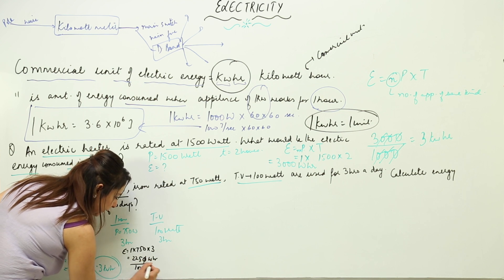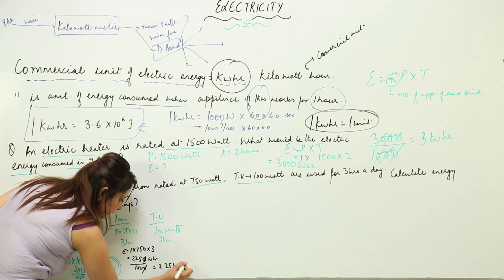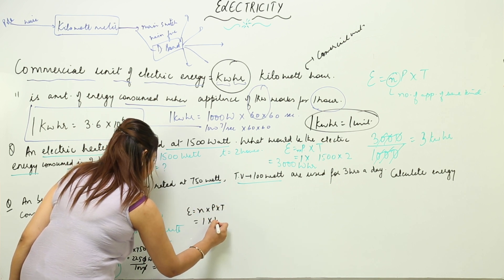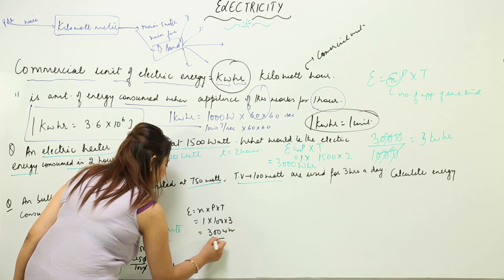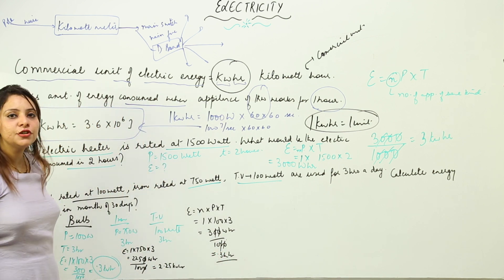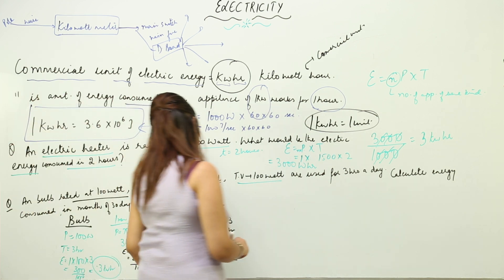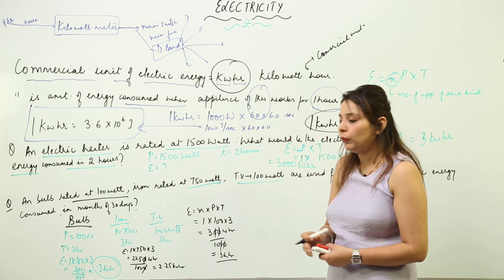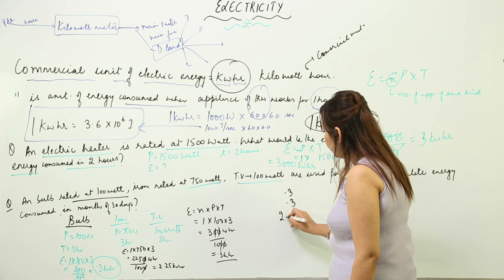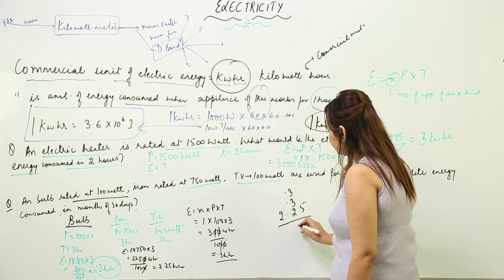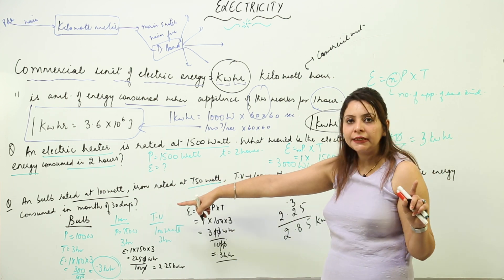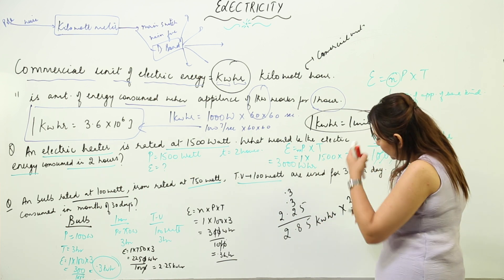The iron gives 2250 watt hours, which converts to 2.25 kilowatt hours. For the TV: E = 1 × 100 × 3 = 300 watt hours, converting to 0.3 kilowatt hours. The total energy consumed in one day is 0.3 + 2.25 + 0.3 = 2.85 kilowatt hours. Since the question asks for 30 days, multiply 2.85 by 30 to get the monthly energy consumption.